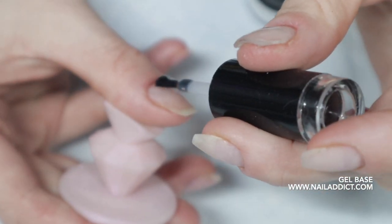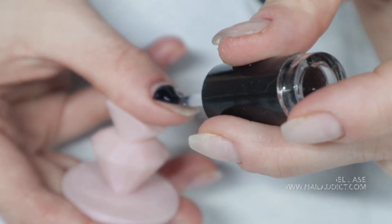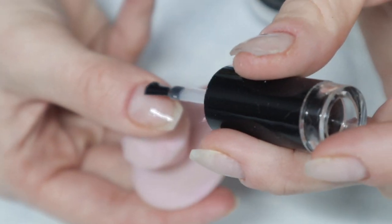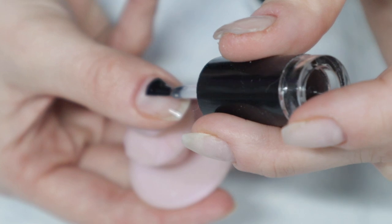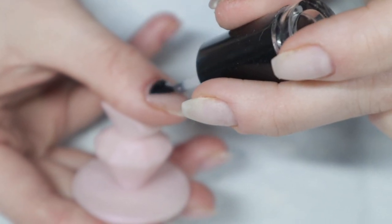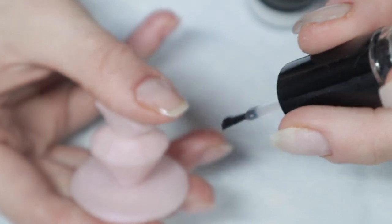Then for my gel base, I'm going to apply a thin layer of gel base. This is the Nail Addict LA gel base. I absolutely love it. And if you need to save some money, I have a discount code down below because their gel products are kind of on the higher end price range.